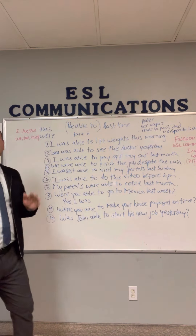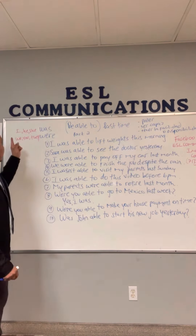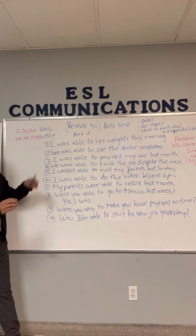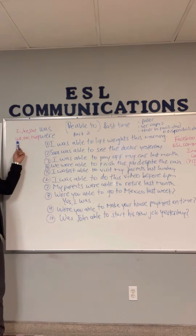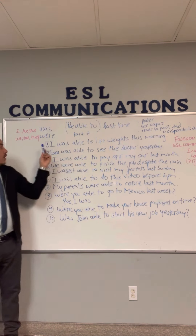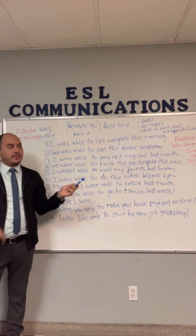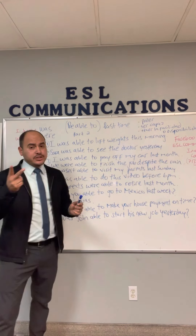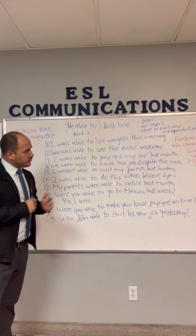¿Cómo se forma el pasado del verbo 'to be'? Para este nivel, deberías saber cómo usar 'was' y 'were' — el pasado del verbo 'to be.' En singular: I was able to, he was able to, she was able to. En plural: we were able to, they were able to. 'You' puede ser singular o plural: you were able to. This is part two — the simple past tense.